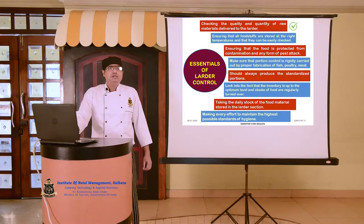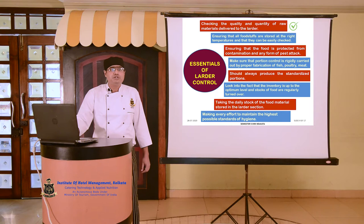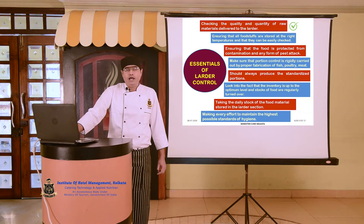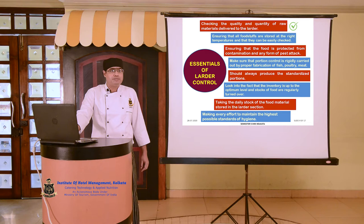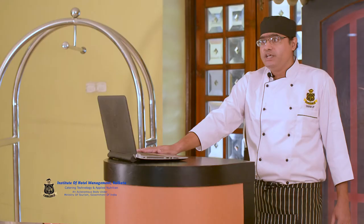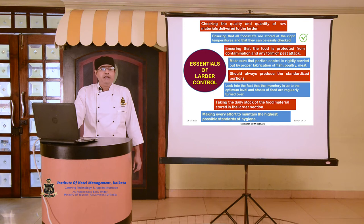Focusing on the essentials of larder control: checking the quality and quantity of the raw materials delivered to the larder. The larder is responsible for storing various meats, fish, shellfish and other related raw materials such as cheese and egg required for its function. It is very important for the larder chef to check the quality and quantity of the raw materials delivered, because if the quality is not good, it is going to affect the yield percentage.